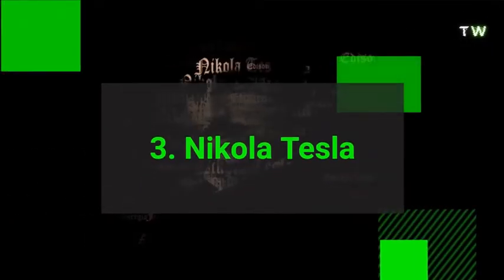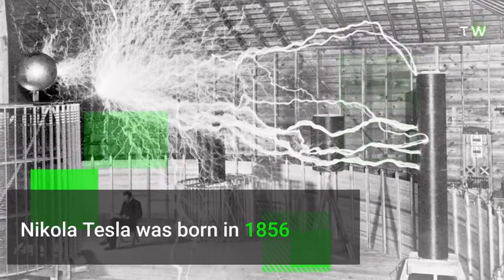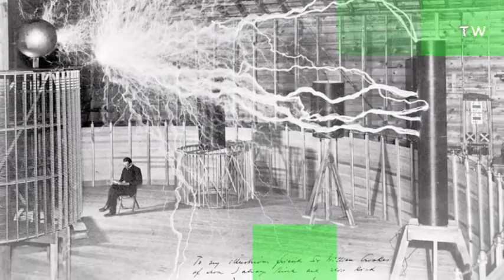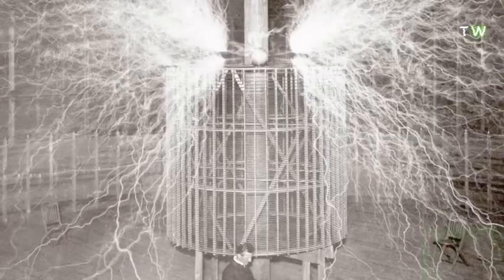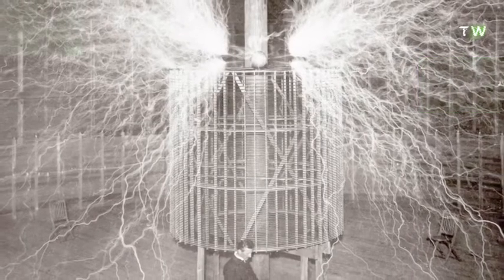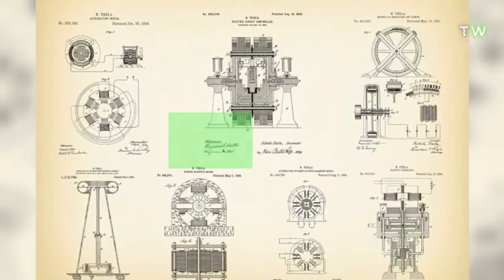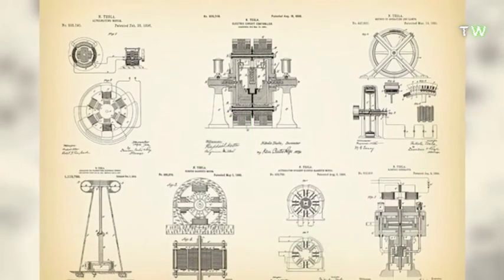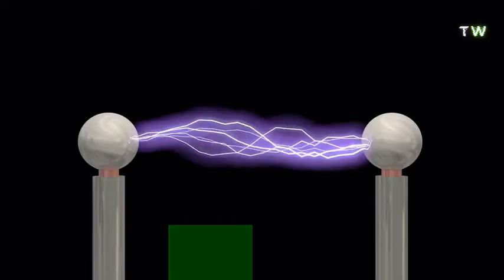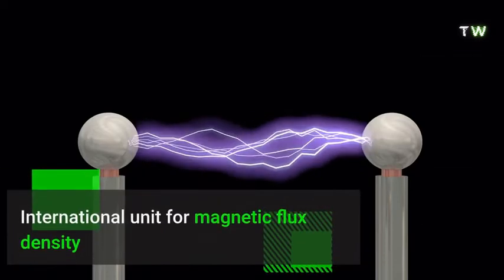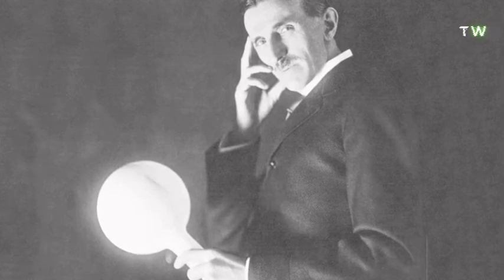Number 3. Nikola Tesla was born in 1856 and studied physics and engineering, setting up laboratories to develop electrical and mechanical inventions. Tesla was charismatic when demonstrating his work to the public and celebrities. His inventions include AC electricity, the Tesla coil, radio, including a radio-controlled boat, neon lamps, and much, much more. After his death, Tesla was largely forgotten, until years later when the International Unit for Magnetic Flux Density was named after him, and interest began to grow again.